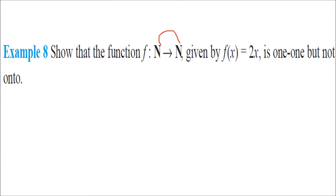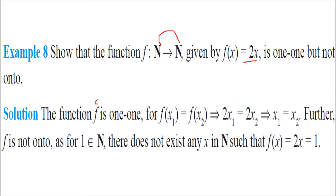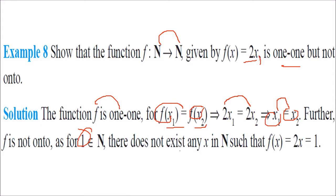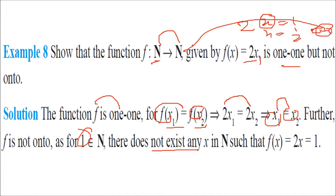Show that the function f: N → N given by f(x) = 2x is one-to-one but not onto. For one-to-one: f(x1) = f(x2) implies 2x1 = 2x2, so x1 = x2. For not onto: take y = 1. You need 2x = 1, which gives x = 0.5, but 0.5 is not a natural number. Therefore f is not onto.